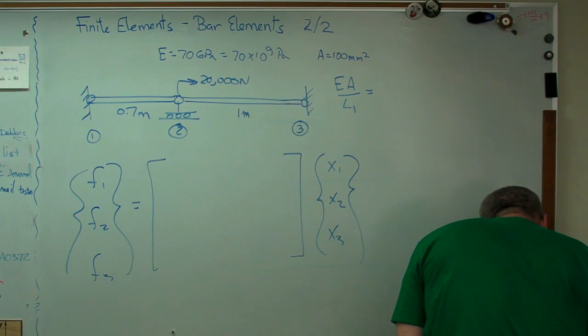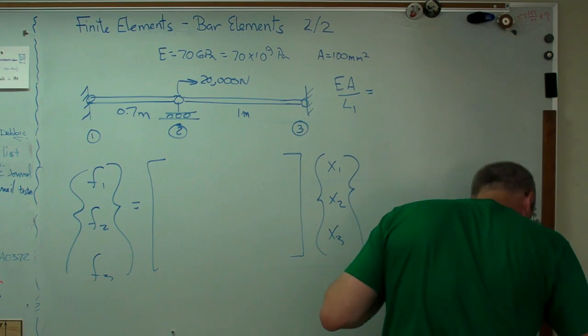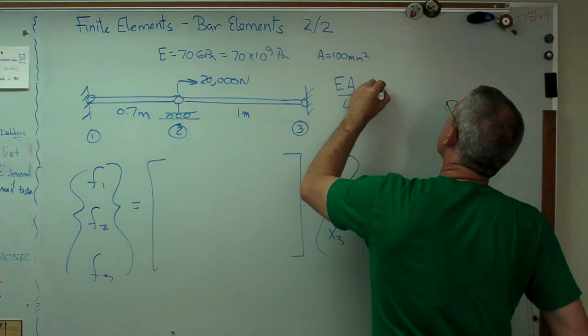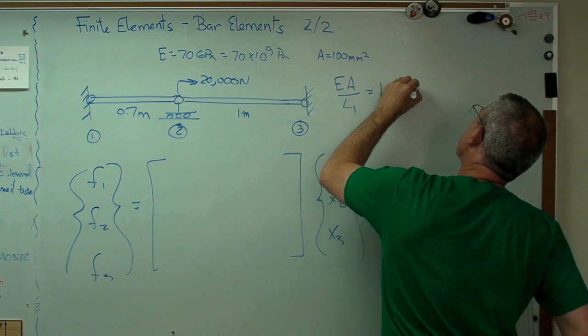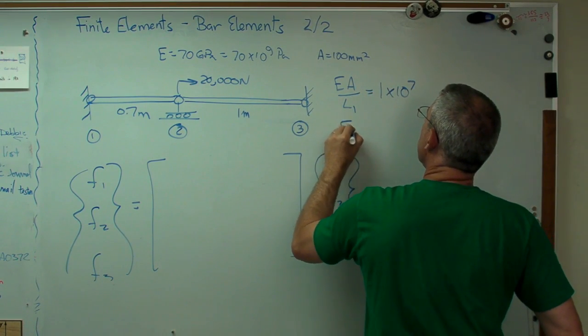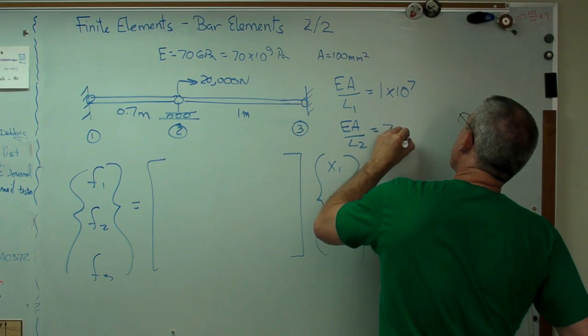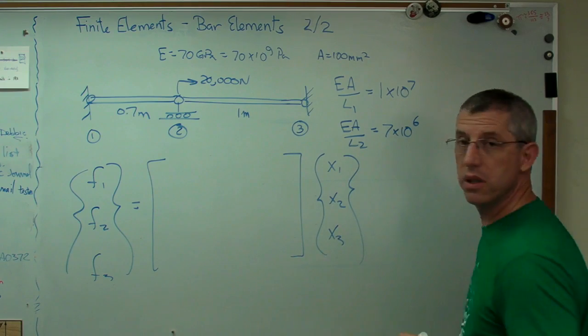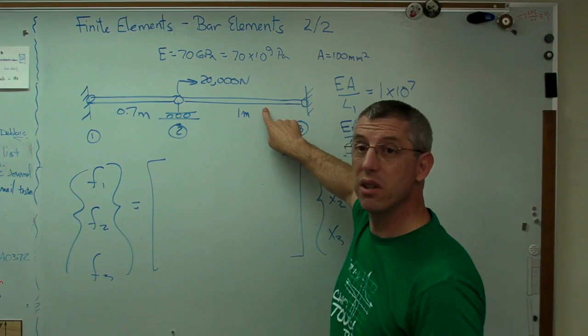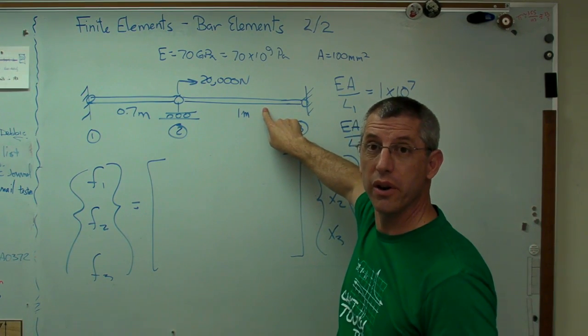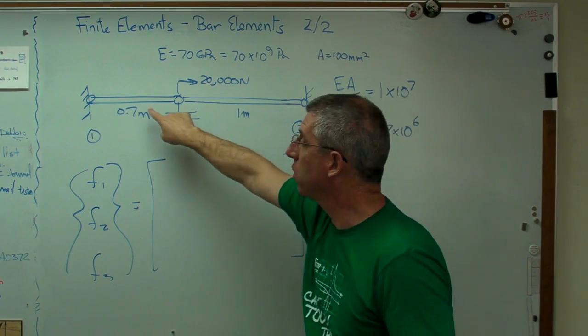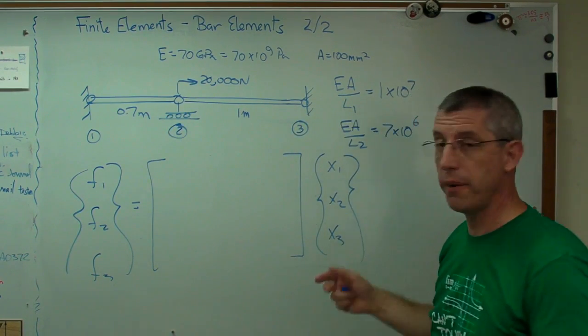And that number is 10 to the plus 7. It's 1 times 10 to the 7th. EA over L2 is going to be 7 times 10 to the 6th. Those are the stiffnesses. The stiffness here is lower because the element's longer. The spring's bigger, right? The shorter one has higher stiffness, bigger number there.